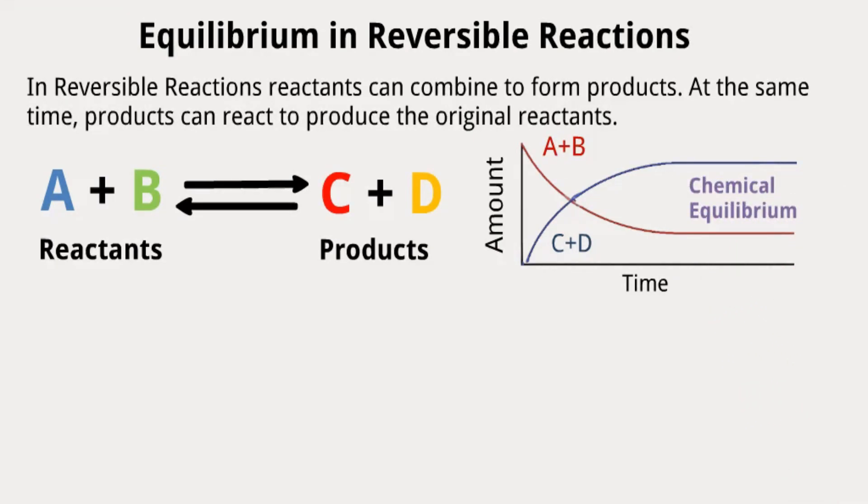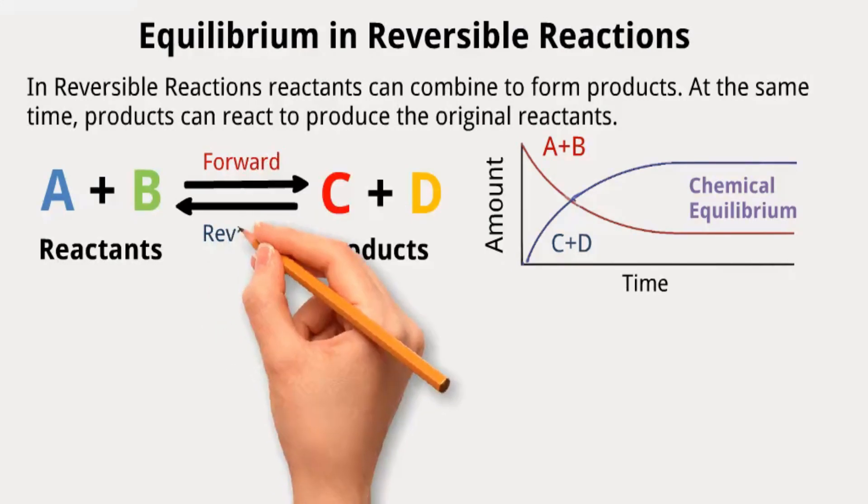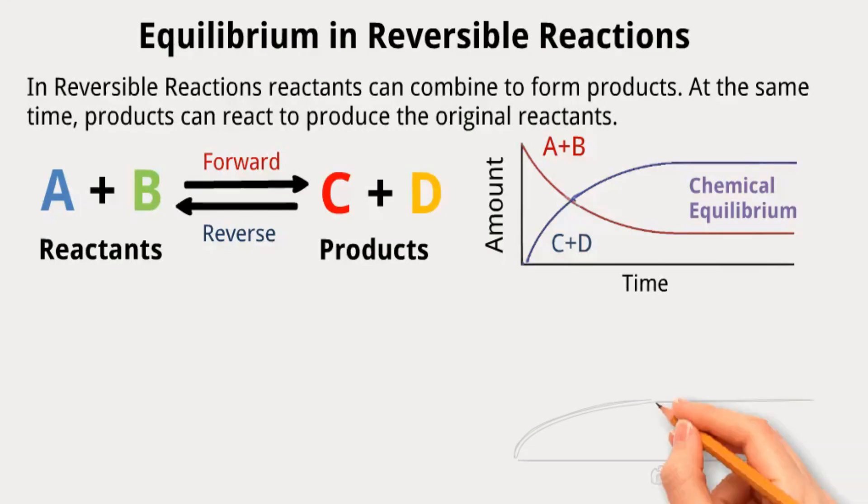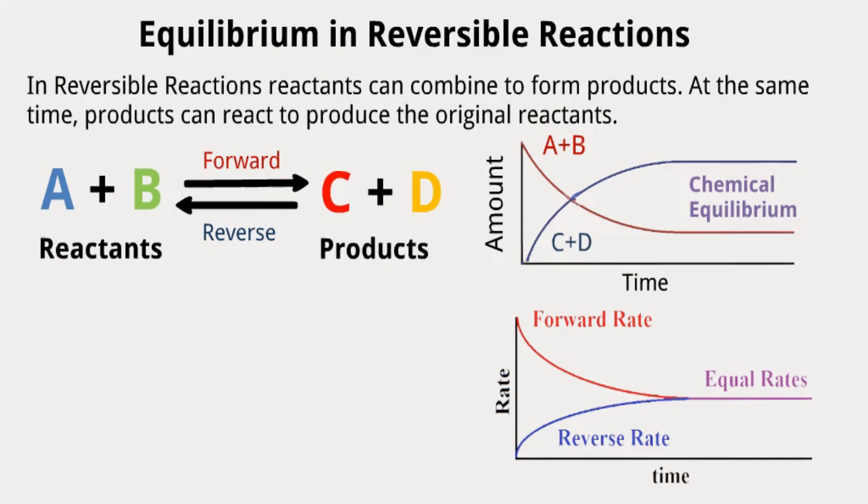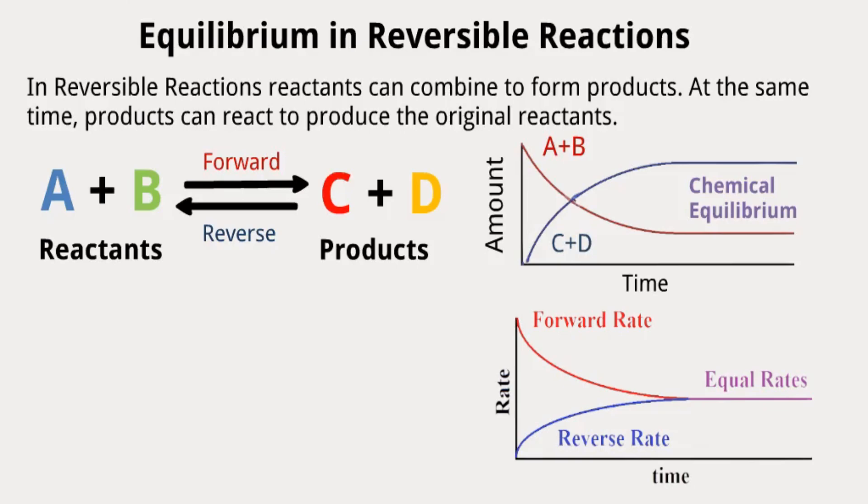At equilibrium, the forward and reverse reactions occur at the same rate, resulting in no net change in the concentrations of reactants and products. In this system, if more reactants are added, then more C and D will be produced. Likewise, when more products are added to the system, then some product molecules will interact to reform the original reactants A and B.